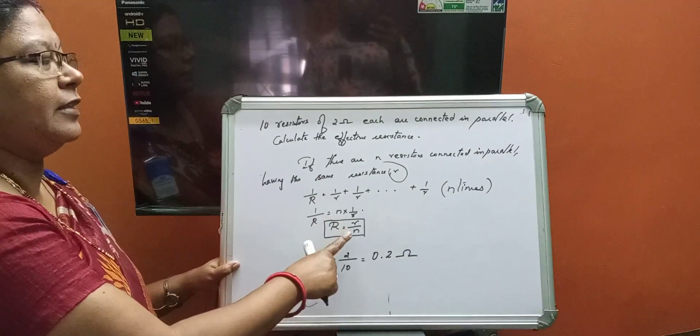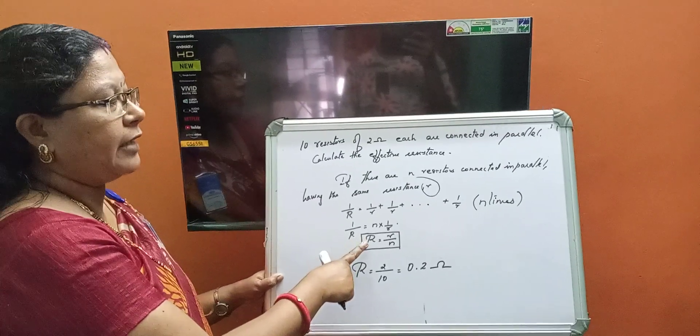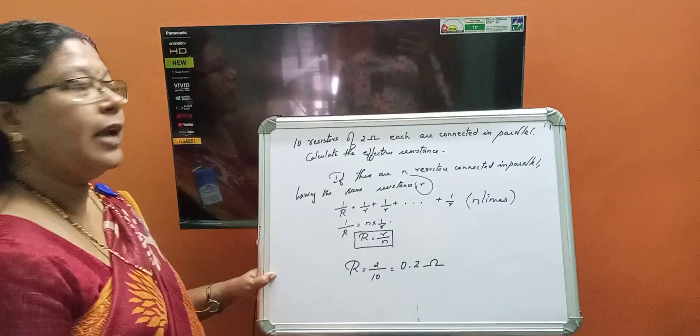If there are n resistors of same resistance, then how do you find the effective resistance? R is equal to small r by n.